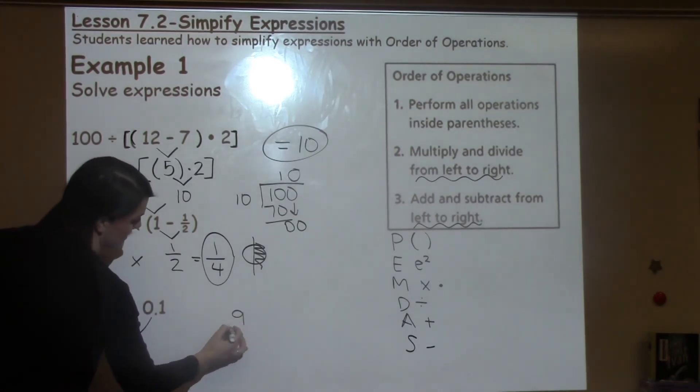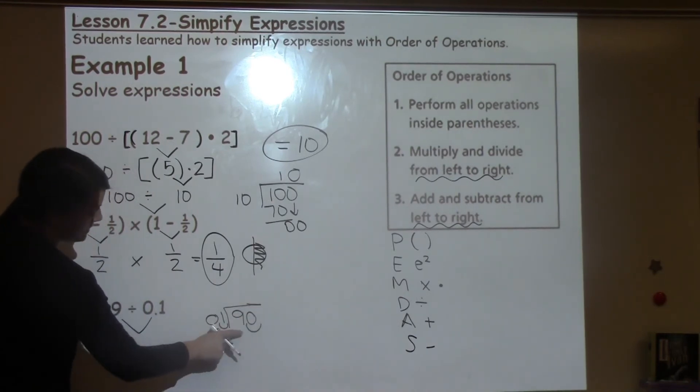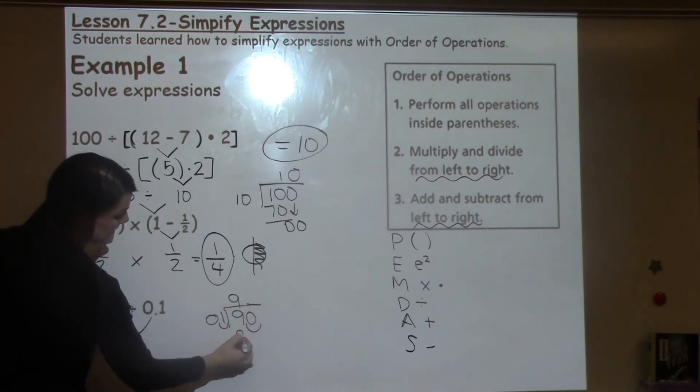9 divided by 1 tenth. Anytime I have a decimal on the outside, I have to move it to the inside. However many spots I move on the outside number, I have to move on the inside number. 1 goes into 9, 9 times.